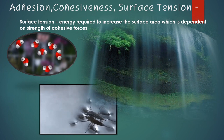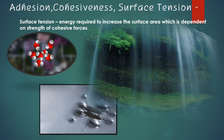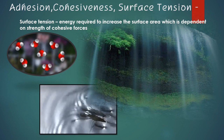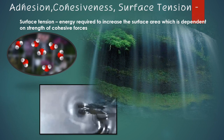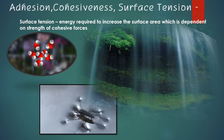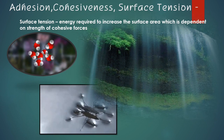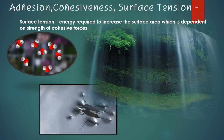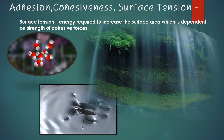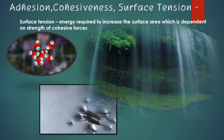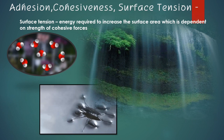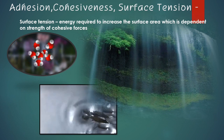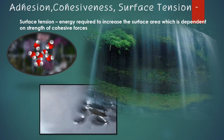Surface tension is well portrayed by a water strider, shown below, that is able to float and hop on top of a water surface — something that seems almost magical. This is possible even while the density of the water strider is higher than the density of water, and by such, it is able to evade or escape its predators.